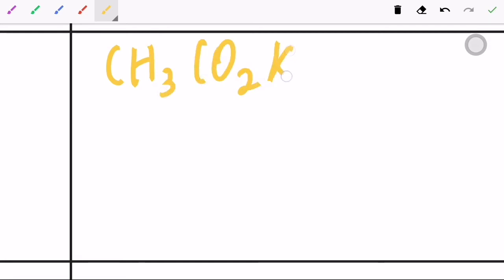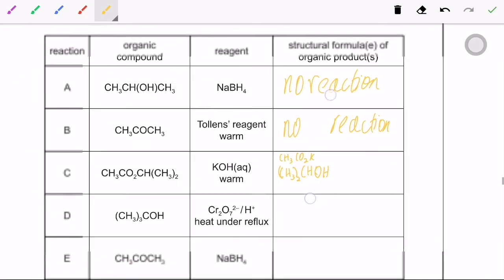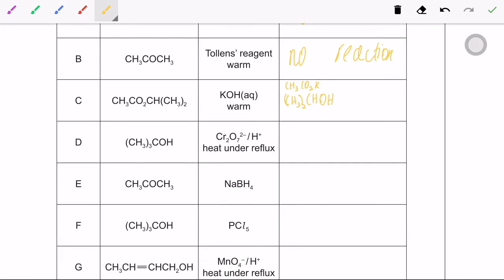It's half a carboxylic acid and half a non-organic product, CHOH. Well it is an organic product but it's an unusual one. So D is definitely no reaction.